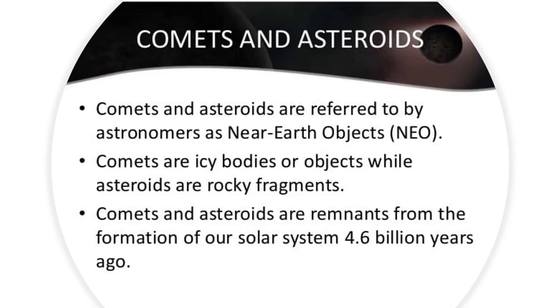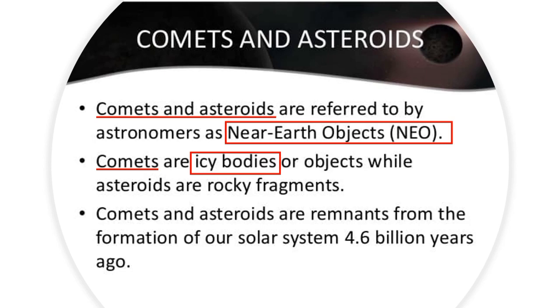Now, let us talk about comets and asteroids. Comets and asteroids are referred to by astronomers as near-earth objects or NEO. Comets are icy bodies or objects while asteroids are rocky fragments. Comets and asteroids are remnants from the formation of our solar system 4.6 billion years ago.